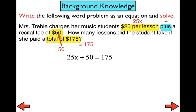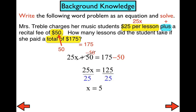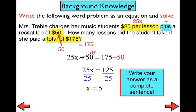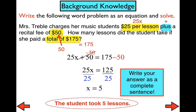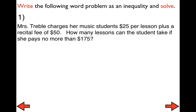The two-step inequality word problems will be extremely similar. We have to remember to add or subtract first, and then multiply or divide second. Most importantly, we need to make sure that we answer the problem with a complete sentence — in this case, 'the student took five lessons.'